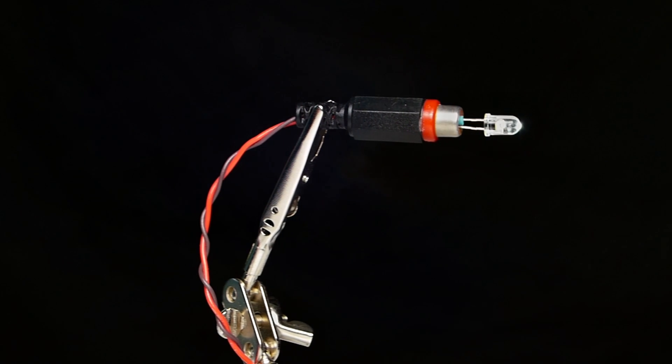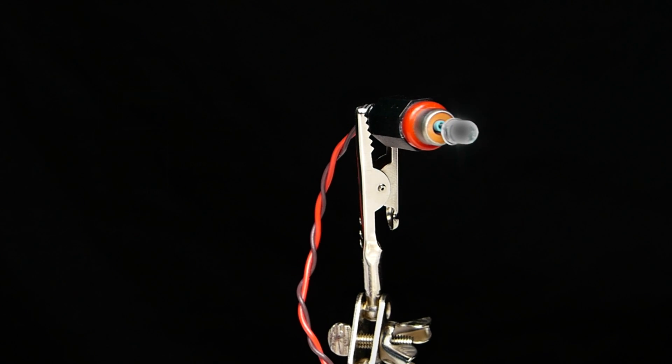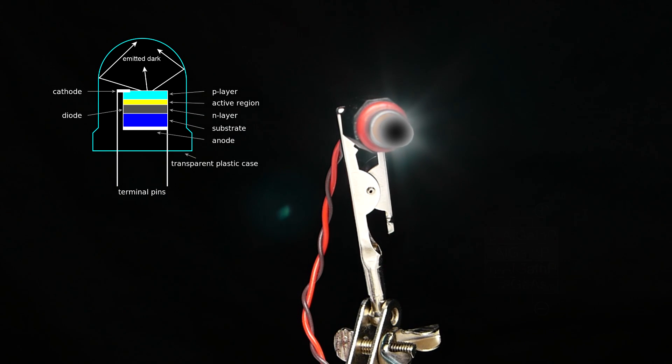Dark emitting diodes, sometimes called light cancelling or light absorbing diodes, are similar in construction to normal LEDs.